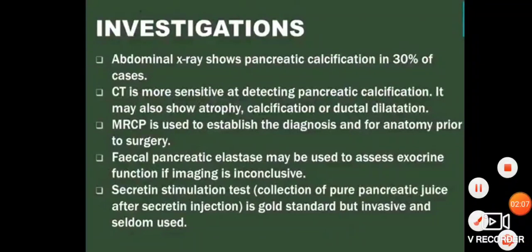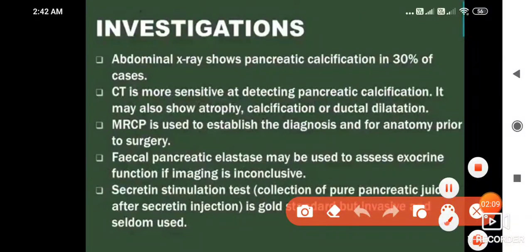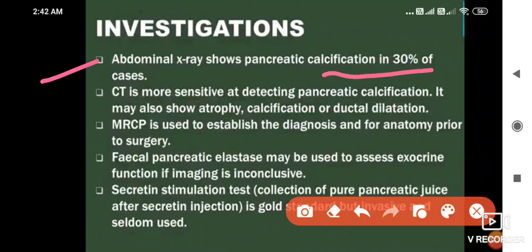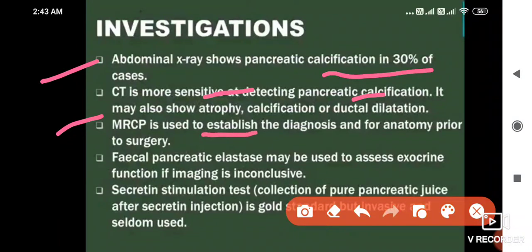For investigations, abdominal X-ray is the primary step — calcification is seen in about 30% of cases. CT scan is more sensitive at detecting pancreatic calcification, showing atrophy, calcification, or ductal dilatation. MRCP is used to establish diagnosis prior to surgery. Fecal pancreatic elastase may be used to assess exocrine function if imaging is inconclusive.